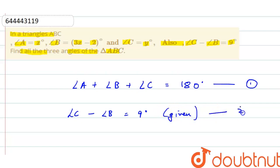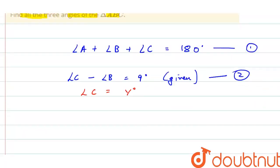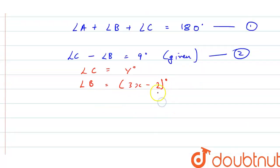So angle C equals y degree, that is also given, and angle B equals 3x minus 2 degrees. Then we have angle A equal to x degree.